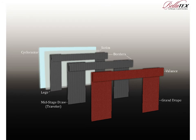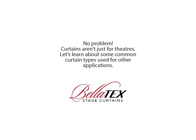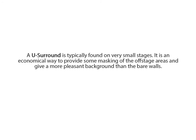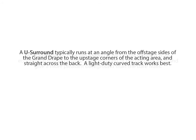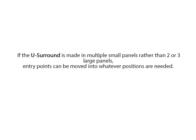Here you can see how all the curtains fit together on a typical stage. Curtains aren't just for theaters. Let's learn about some common curtain types used for other applications. A used surround is typically found on very small stages. It is an economical way to provide some masking of the offstage areas and give a more pleasant background than the bare walls. A used surround typically runs at an angle from the offstage side of the grand drape to the upstage corners of the acting area and straight across the back. A light duty curved track works best. If the used surround is made in multiple small panels rather than two or three large panels, entry points can be moved into whatever positions are needed.